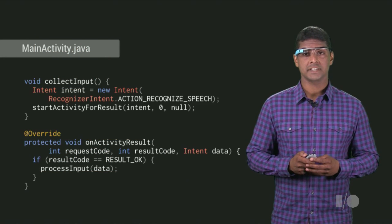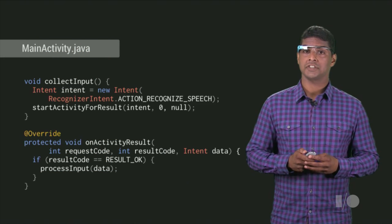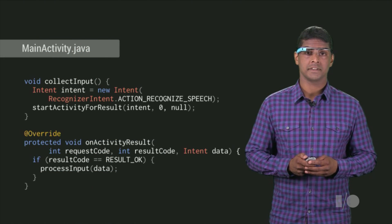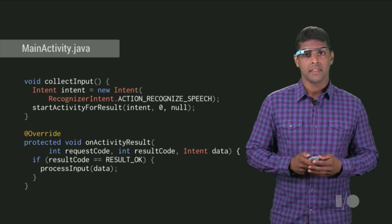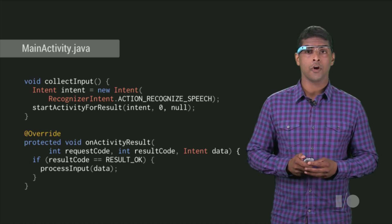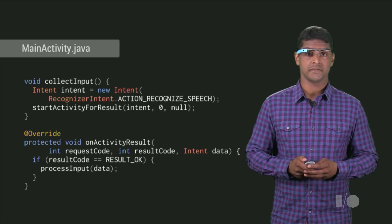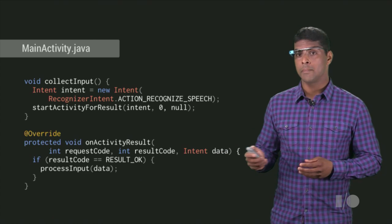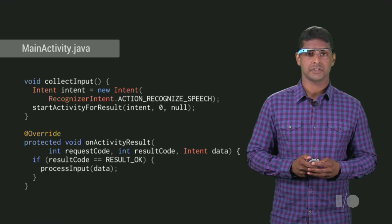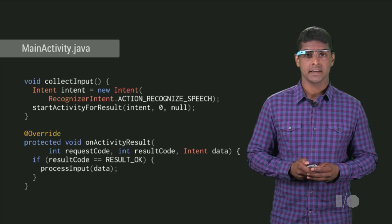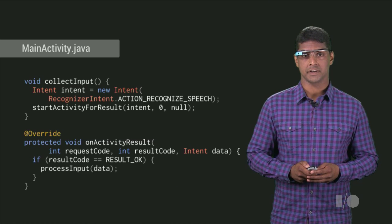With RecognizerIntent, you can launch an activity in the Glass platform that prompts the user for open-ended input. This activity will look and feel just like other open-ended UIs you've seen on Glass. Here, MainActivity launches a RecognizerIntent and then processes the recognized text in onActivityResult.